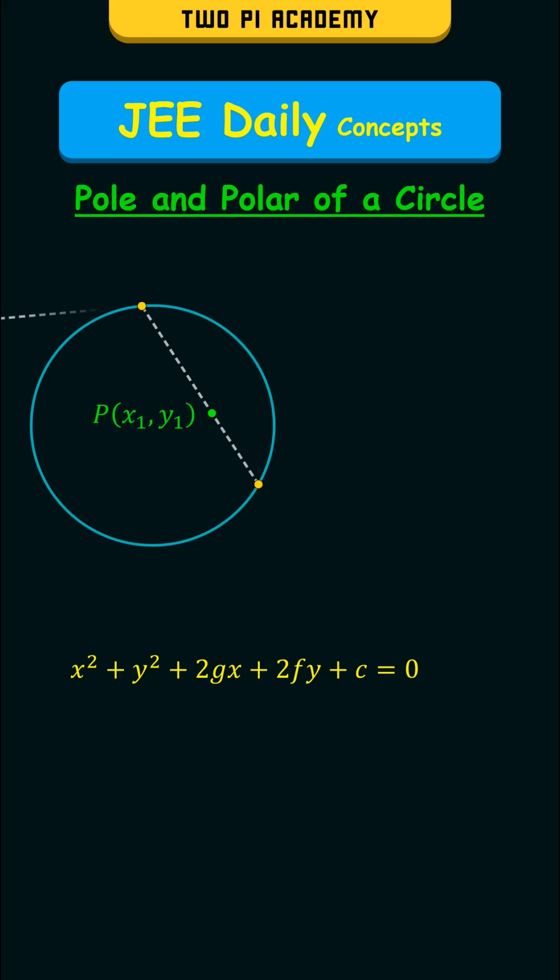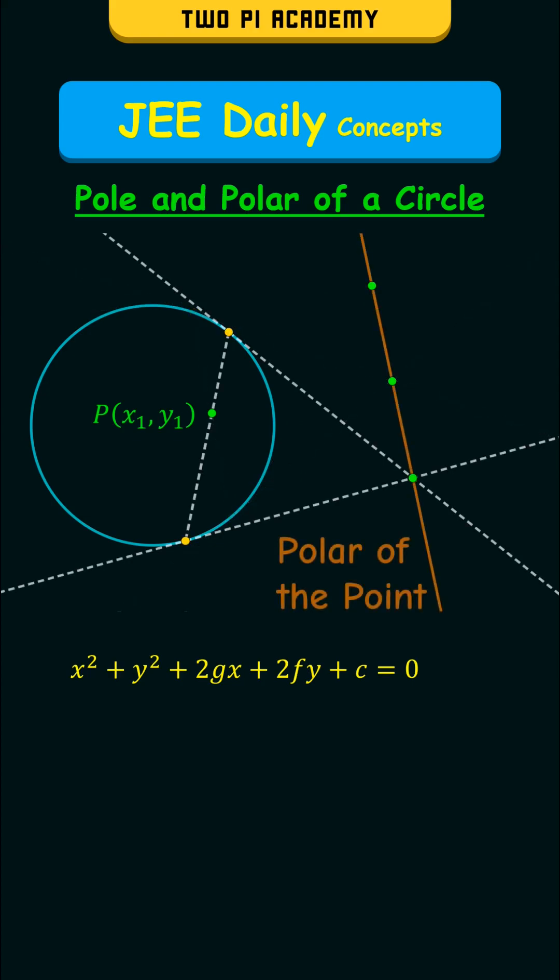And for every chord, if you draw the tangents from its endpoints and mark their point of intersection, the locus of all these points is known as the polar of the given point and the given point is known as the pole of the polar.